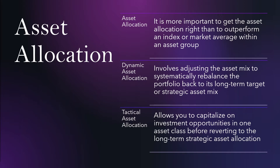Asset allocation is another thing that managers really look at when developing the asset mix. It means getting the right percentage of cash, fixed income, and equities in the portfolio. It is more important to get this asset allocation right than to outperform in a specific asset group. There are two different types of asset allocation: dynamic and tactical.